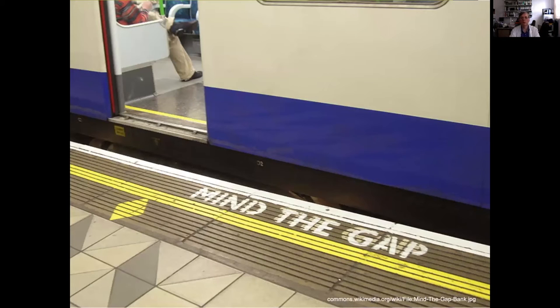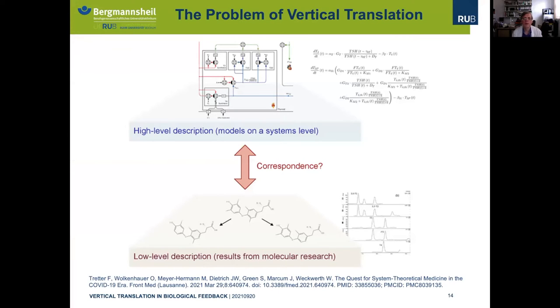Perhaps the most important problem is that we have a gap between the molecular level and the level of the whole organism. We have a very good understanding of the functioning of the organism on a molecular level, and we have a good understanding on a systems level. But the question is, how can we assure the correspondence between these two levels? How can we translate between the low level and the high level and vice versa? This is a continued challenge.